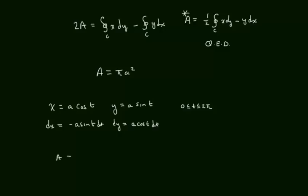Employing the formula, we have one-half the line integral over c of x dy minus y dx, which equals one-half the integral from 0 to 2 pi of a squared cosine squared t minus negative a squared sine squared t, all dt.